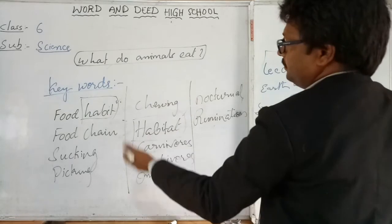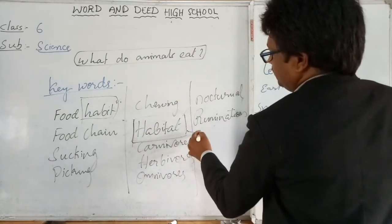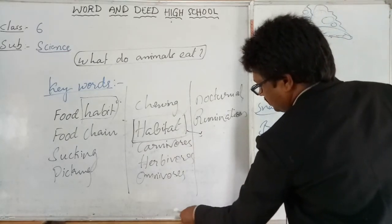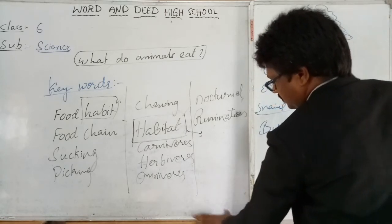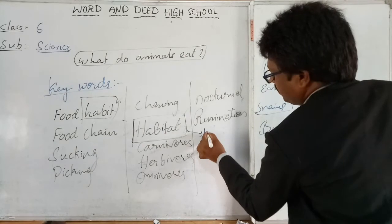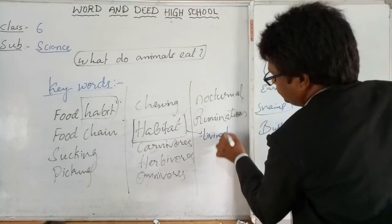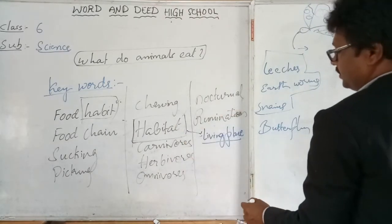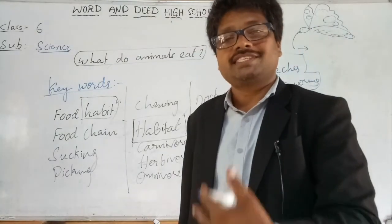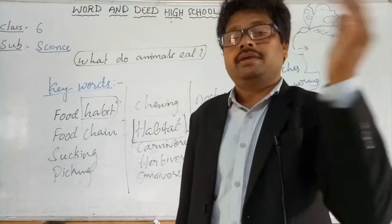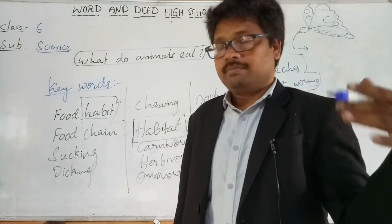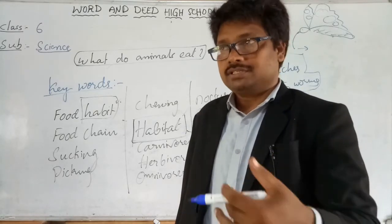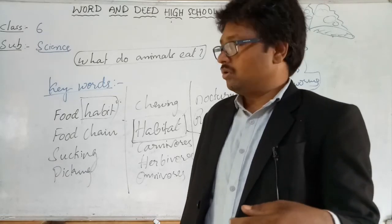Habit is a regular activity, and habitat is a living place. Habitat is the living place of any living thing. For example, fish live in water — water is the habitat of fish. Some microorganisms live in the air — air is their habitat. The place where any living thing lives is called its habitat.